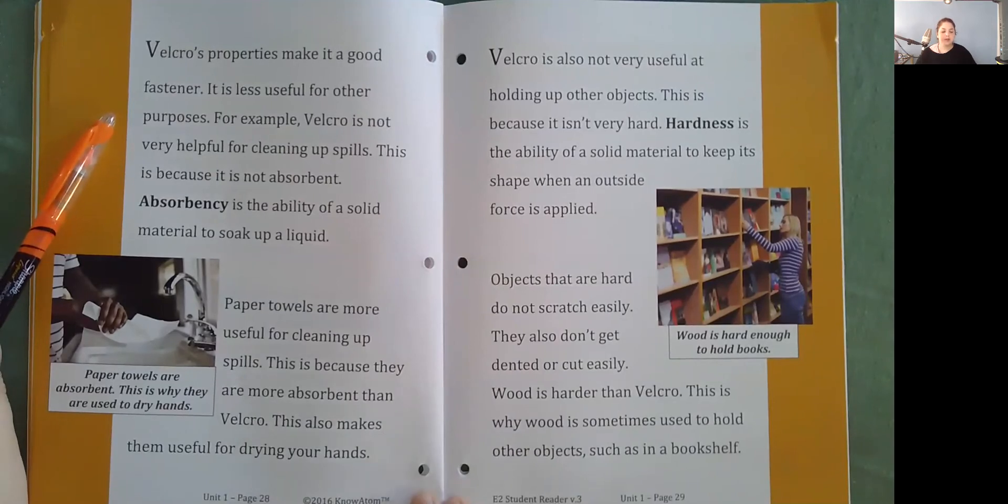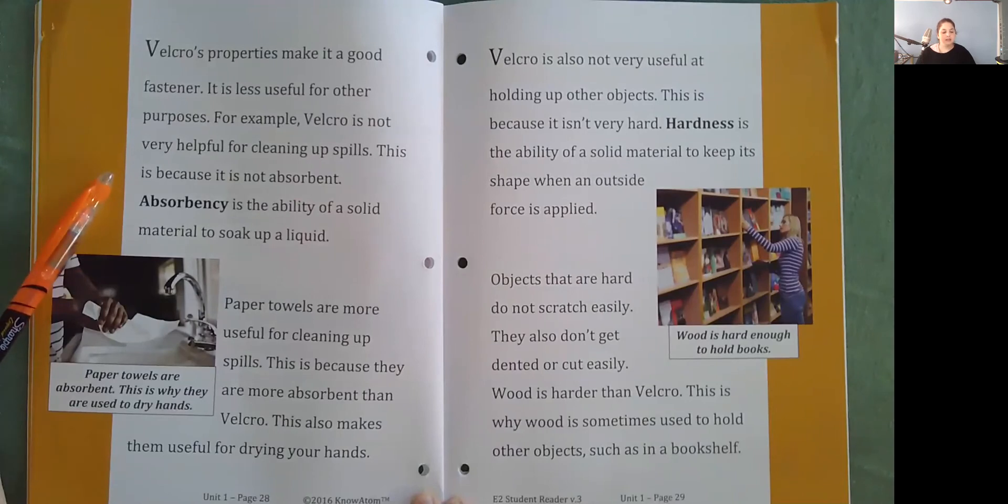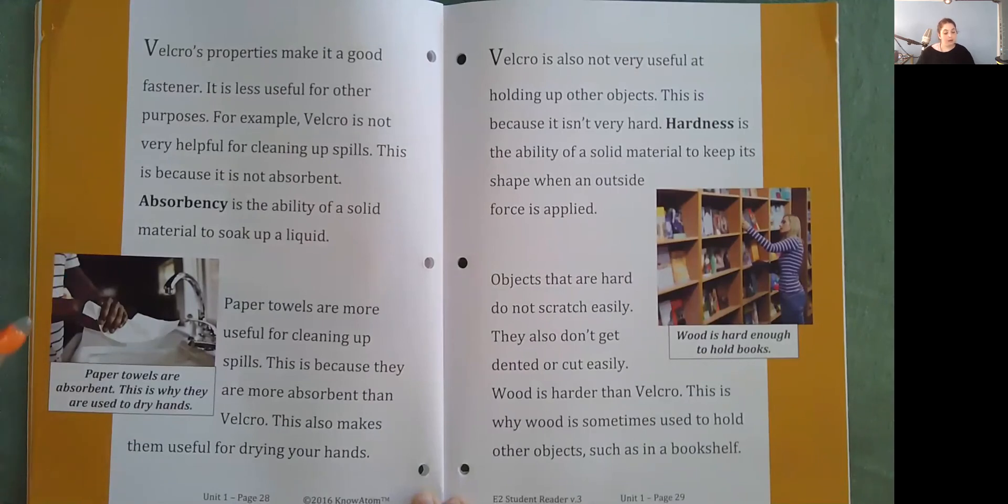Velcro's properties make it a good fastener. It is less useful for other purposes. For example, Velcro is not very helpful for cleaning up spills. This is because it is not absorbent. Absorbency is the ability of a solid material to soak up liquid. Paper towels are more useful for cleaning up spills. This is because they are more absorbent than Velcro. This also makes them useful for drying your hands.